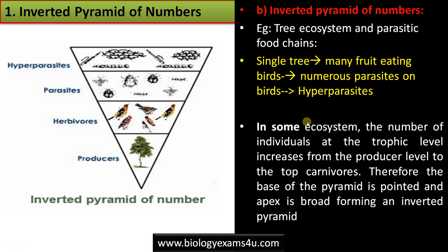In this ecosystem, the number of individuals decreases as we move up the trophic level. Therefore the base of the pyramid will be pointed and the apex will be broad, forming an inverted pyramid.